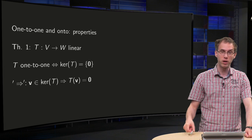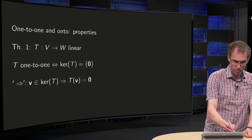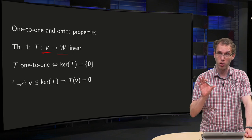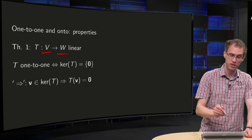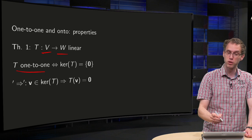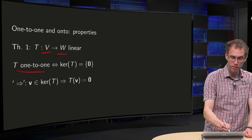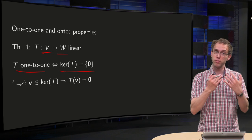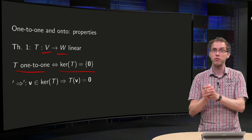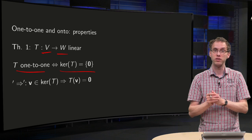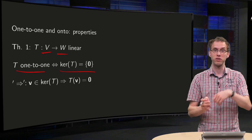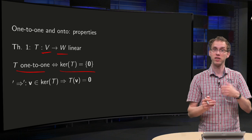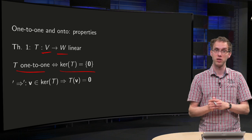First, about the one-to-one. If I have a transformation T from V to W that is linear — that's important, this only holds for linear transformations — then T is one-to-one if and only if the kernel of T contains only the zero vector. So, to check whether a transformation is one-to-one, you only have to look at the kernel of T. If it contains only the zero vector, your transformation is one-to-one. If your kernel contains more vectors, then your transformation is not one-to-one.